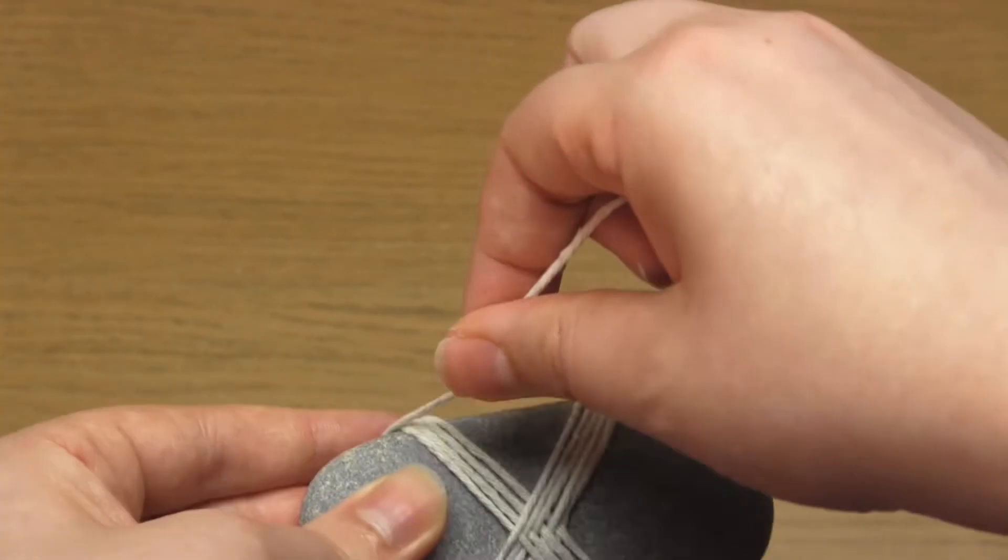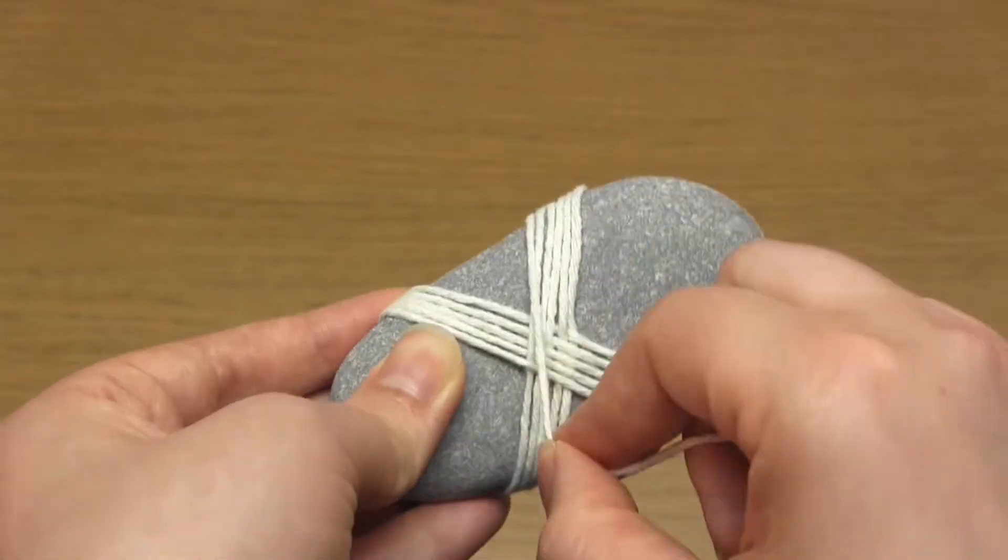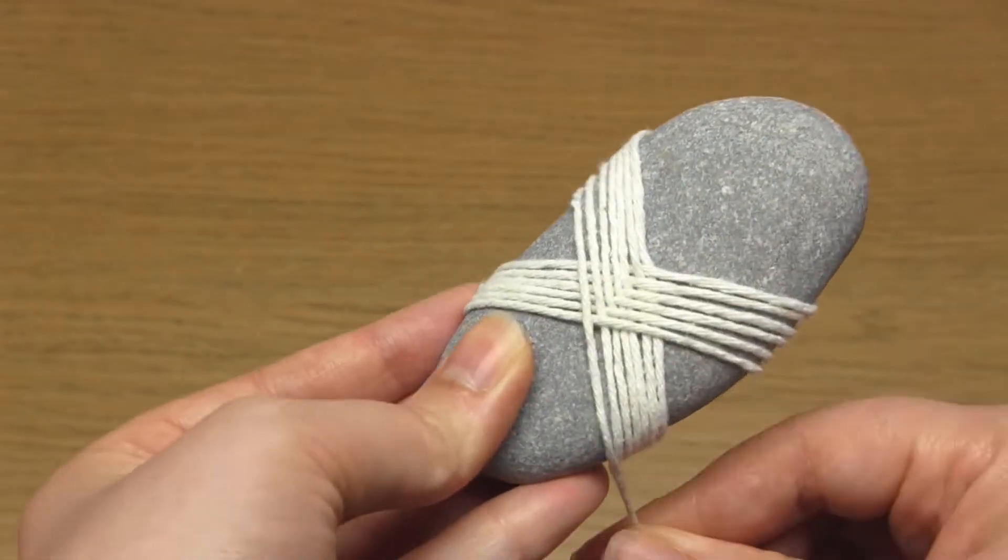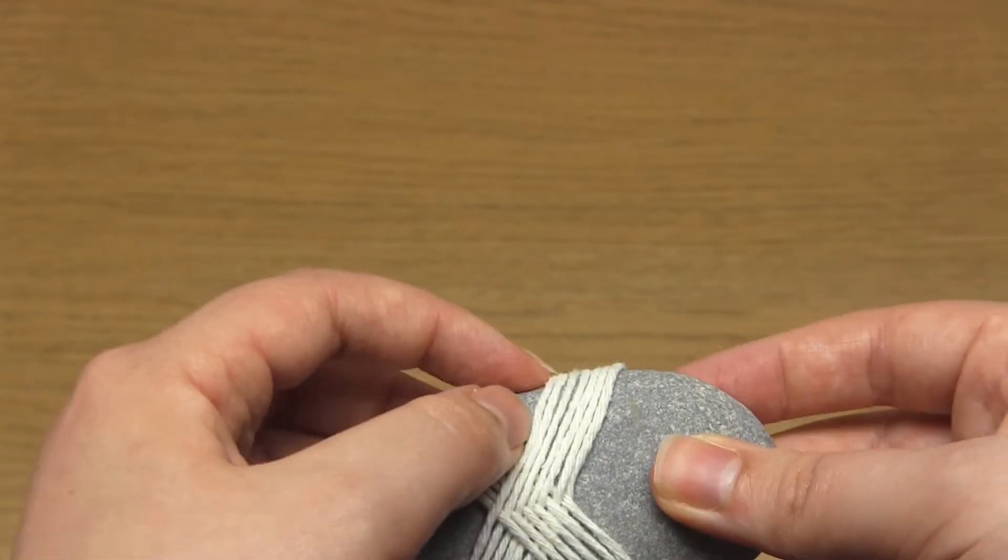Make sure to keep tension in the yarn whenever you're wrapping it so that the strands are taut and not loose. Keep going until the stone is wrapped exactly how you want it.